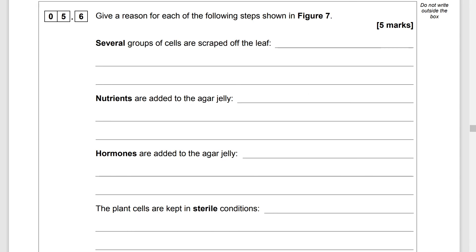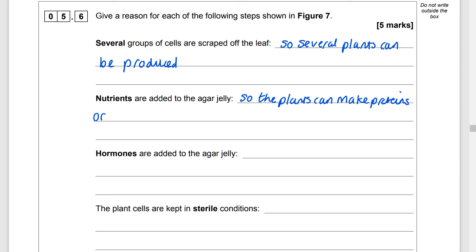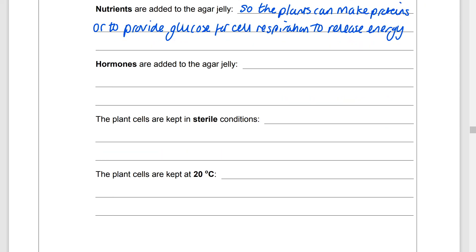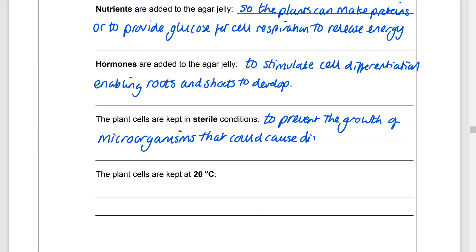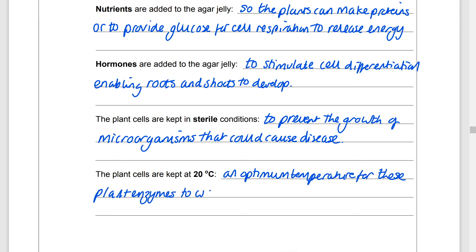Give a reason for each step shown in Figure 7. Several groups of cells are scraped off the leaf so that several plants can be produced. Nutrients are added to the agar jelly so the plants can make proteins for growth or to provide glucose for respiration to release energy. Hormones are added to the agar jelly to stimulate cell differentiation — cells taken from the leaf need to differentiate and multiply, enabling roots and shoots to develop. Plant cells are kept in sterile conditions to prevent the growth of microorganisms that could cause disease. Plant cells are kept at 20 degrees C as this is the optimum temperature for plant enzymes, enabling optimum growth.